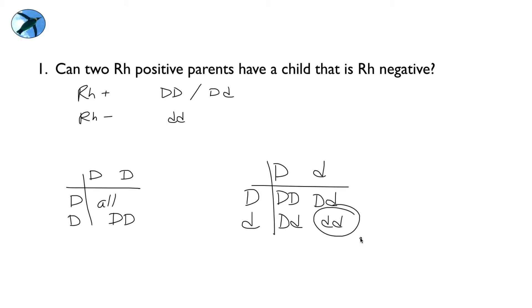So the answer is yes, two Rh positive parents can have a child that's Rh negative. Both parents have to be heterozygous, and if that's the case, you've got a 25% chance.